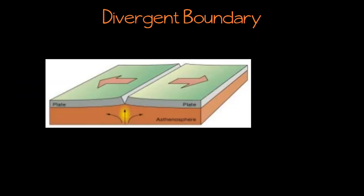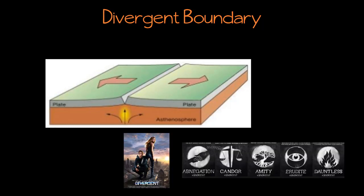So let's talk about divergent boundaries. To remember this, I like to think about the movie Divergent, because the people in the movie are divided apart into different factions. In a divergent boundary, the plates are moving apart — they're separating. Plates can diverge underwater, two oceanic plates can diverge underwater, or plates can also diverge on land.